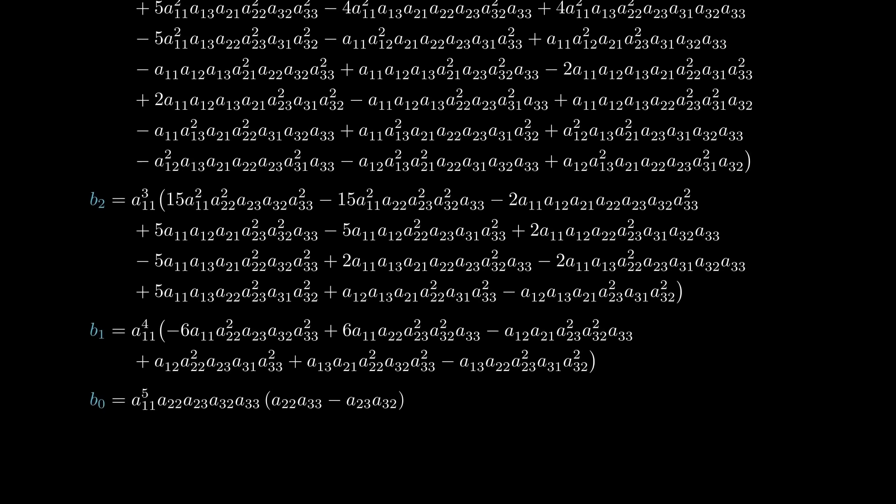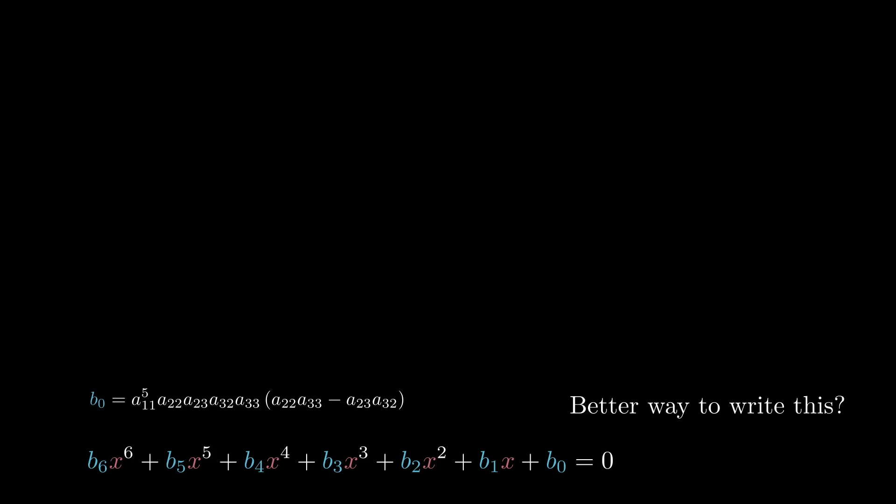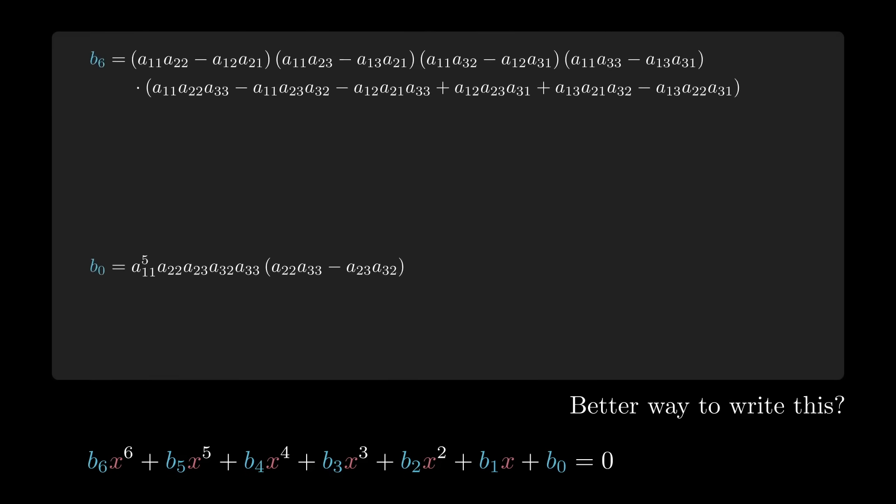So is that the answer? Well, it does give us a formula for the equation satisfied by the top left entry of the Sinkhorn limit. But an obvious question is whether there's a better way to write this. One that's maybe, you know, not awful. More importantly, is there some insight we can get here that will let us predict what the equations look like for Sinkhorn limits of 4x4 tables or 5x5 tables? Amazingly, there is. To see it, let's first look at the constant coefficient b0 and the leading coefficient b6.